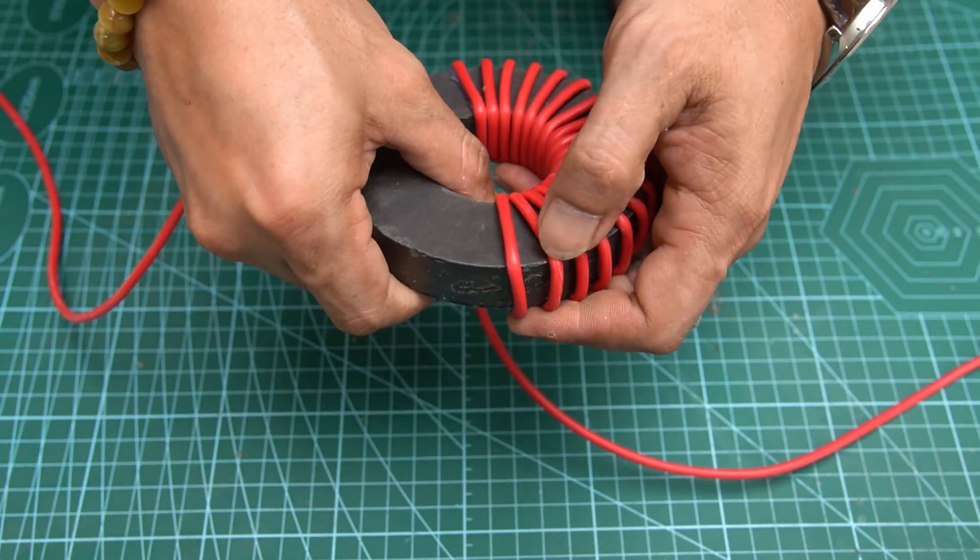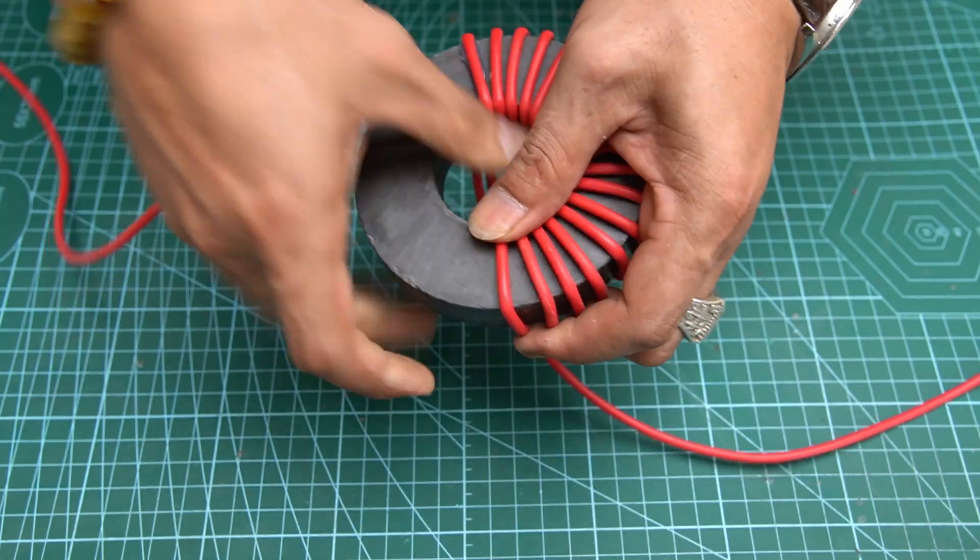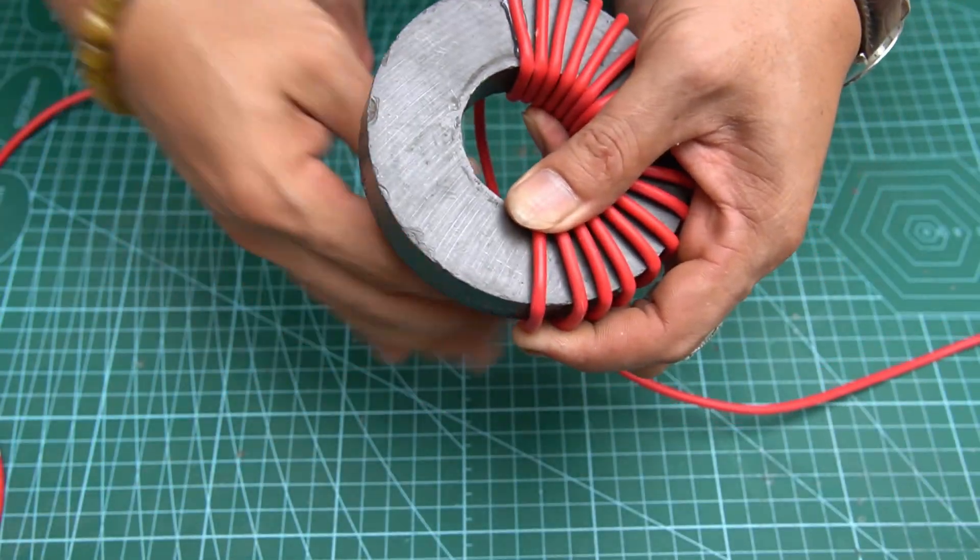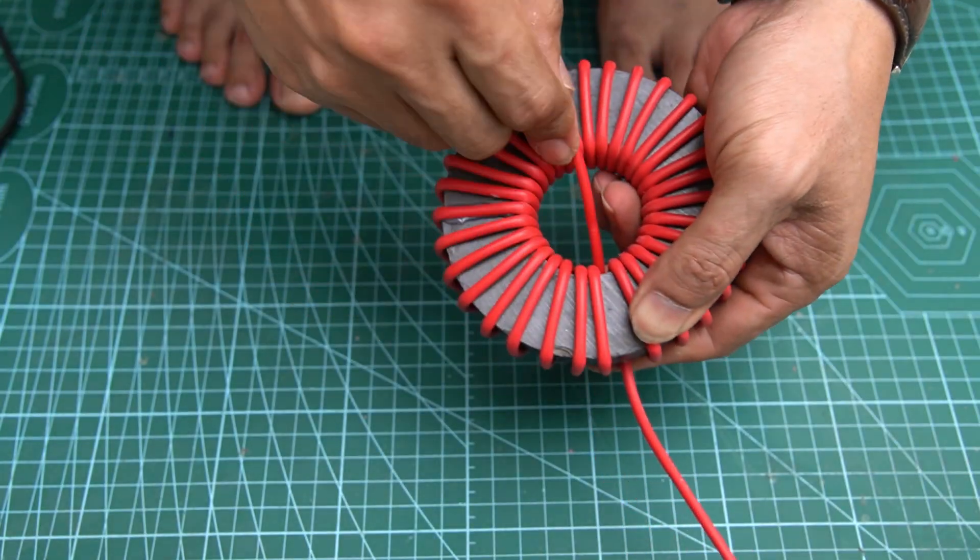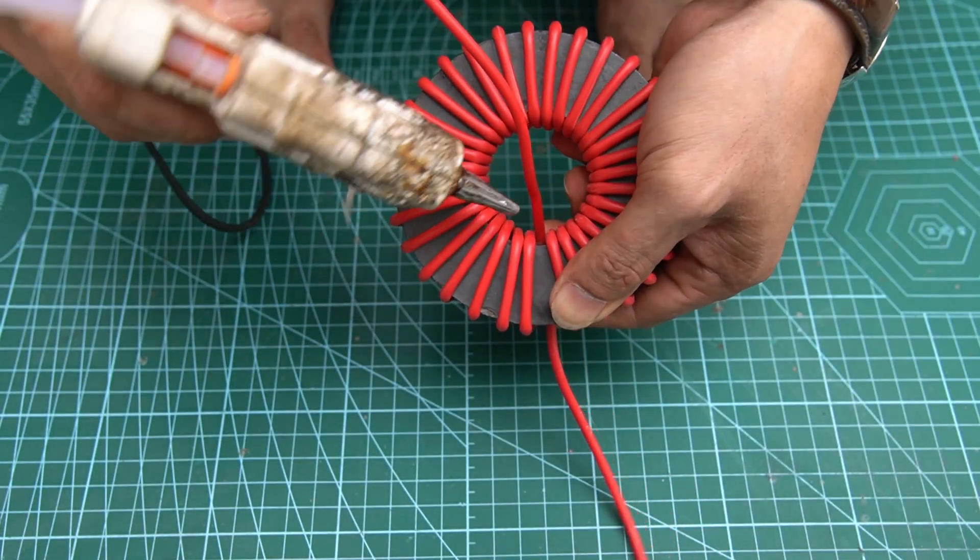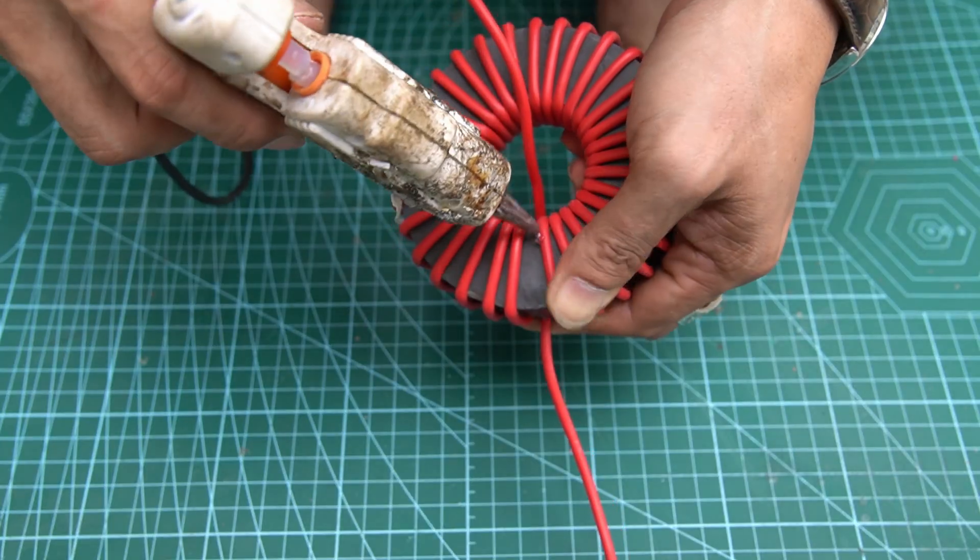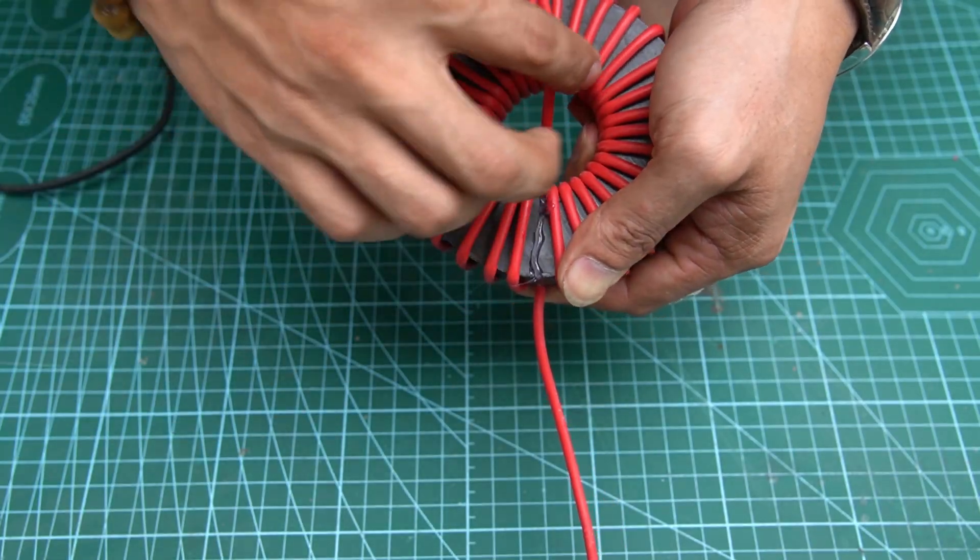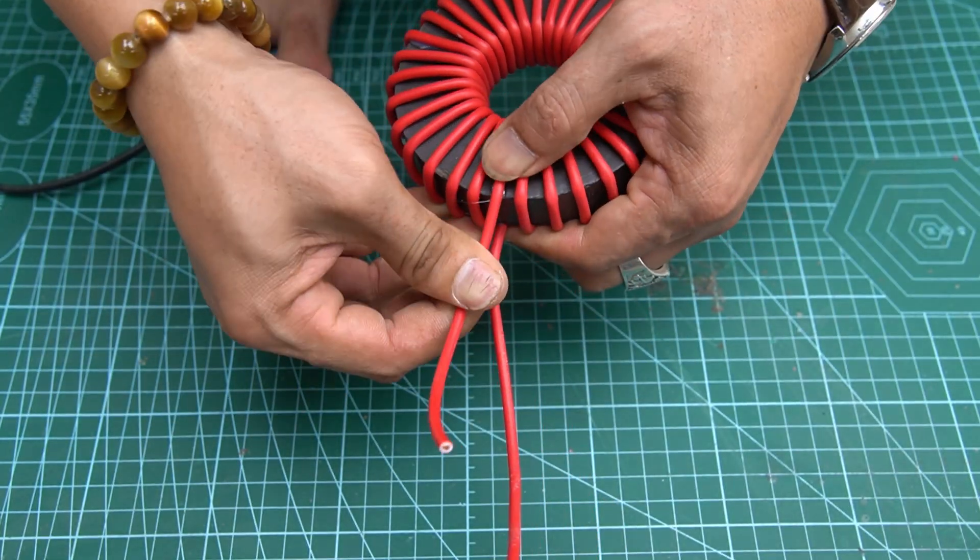First you will use wire to wrap around the large round magnet. Note that you should wrap the wire from the inside out and the distance between the turns of wire should be even. Once I have enough loops, I will use special glue to secure the two ends of the wire.